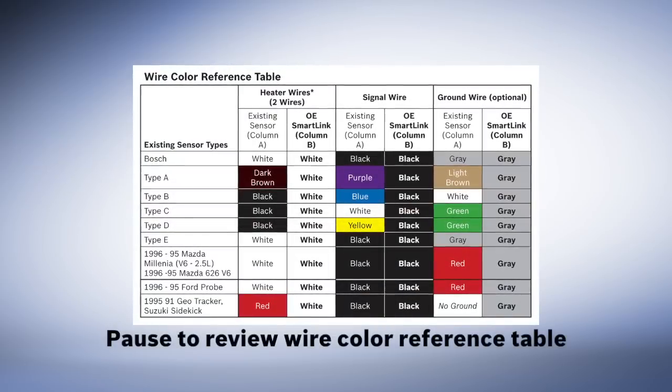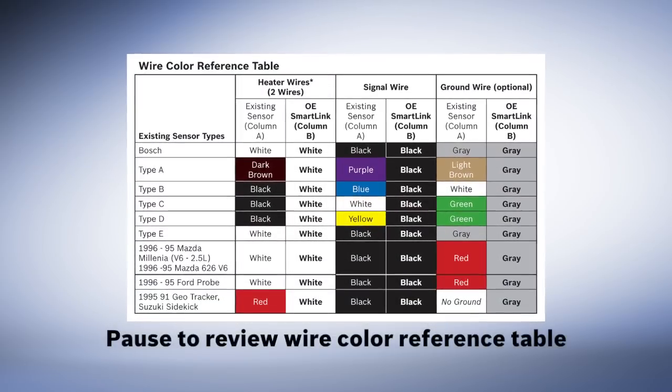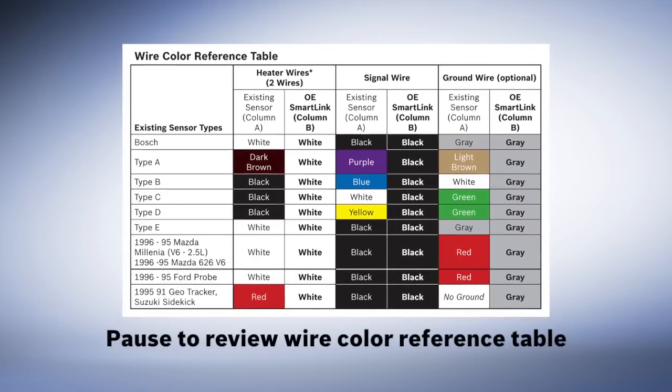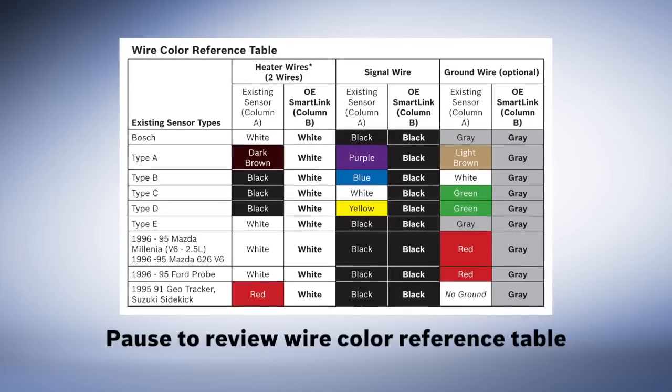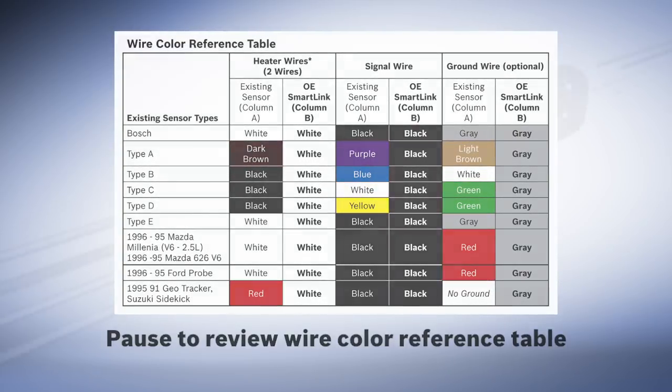Now, refer to the wire color reference table found on the instruction sheet to identify the proper wire connections. The two wires that are the same color are your heater wires. These will connect to the two white wires on the universal sensor.